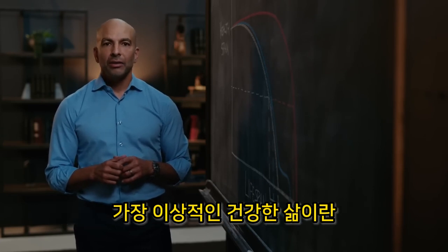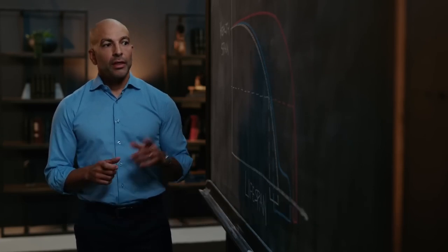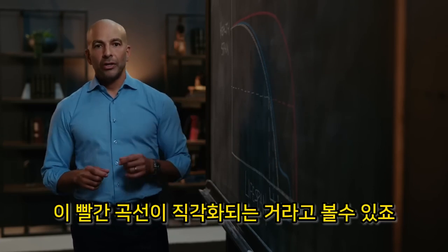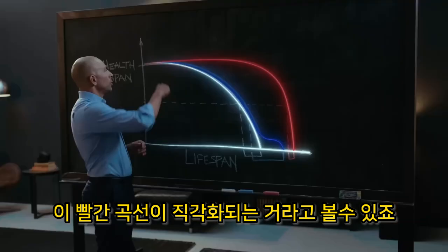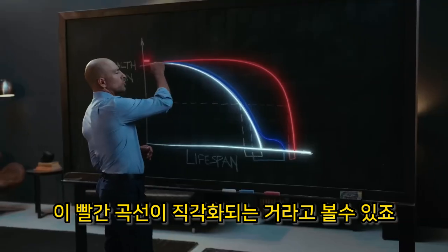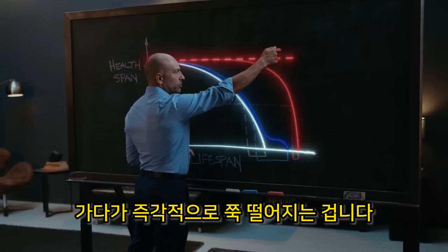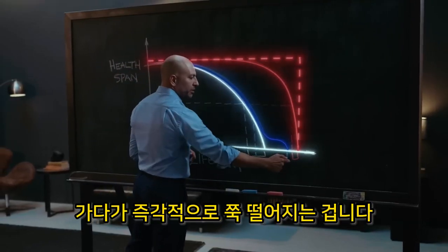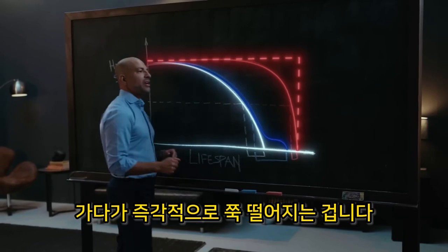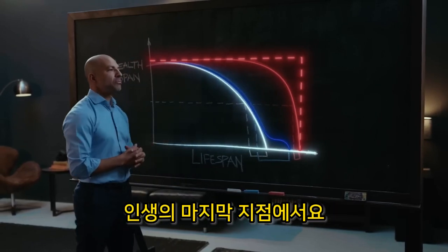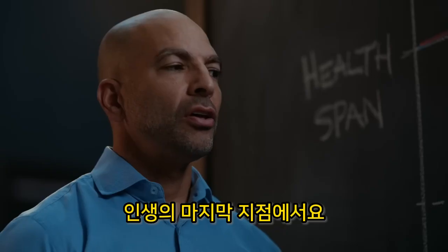In an ideal world, that red curve would be a straight line that drops vertically and instantaneously at the end of a person's life.